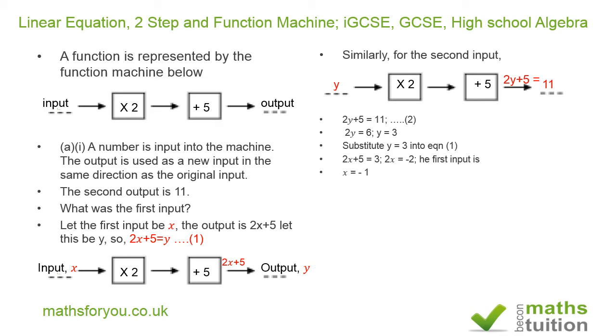Now for the next question, which carries three marks, and I think the next question is easier than the first question. Anyway, it says a number is input into the machine. The output is the same as the input. What was the input?